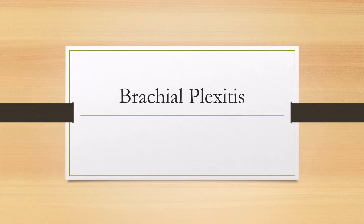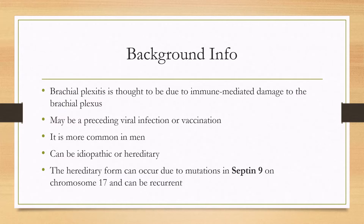Brachial plexitis is thought to be due to immune-mediated damage to the brachial plexus. There may be a preceding viral infection or vaccination, which typically occurs in over half of patients. It is more common in men, and the disease can be either idiopathic or hereditary.